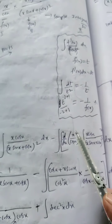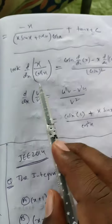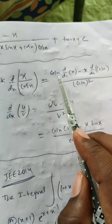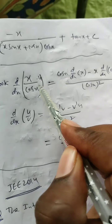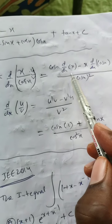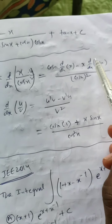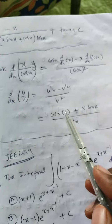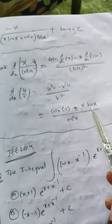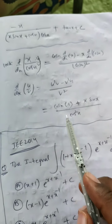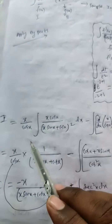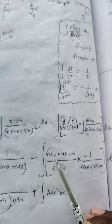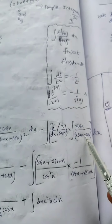Now differentiate the first function x/cos x using the quotient rule: d/dx(u/v) = (v · u' − u · v') / v². Here u = x, v = cos x, so: [cos x · 1 − x · (−sin x)] / cos²x = (cos x + x sin x) / cos²x. Substituting back, the integration of the second function is −1/(x sin x + cos x), and its integrand times (cos x + x sin x)/cos²x appears.